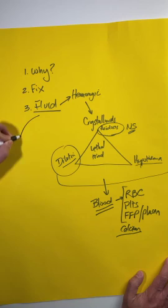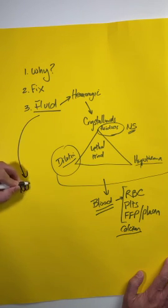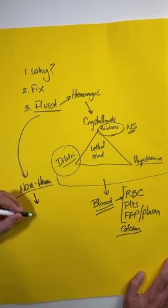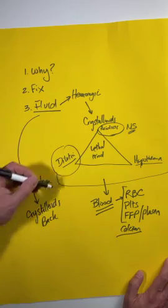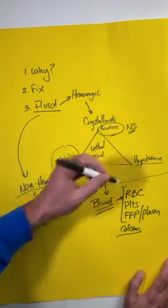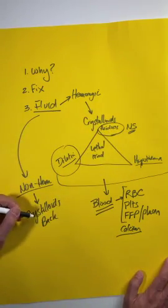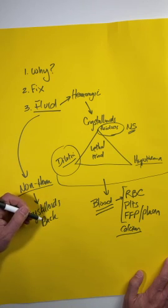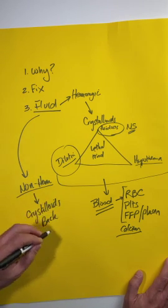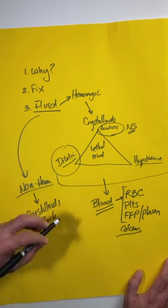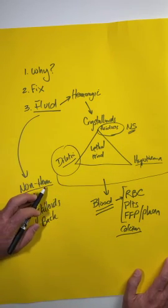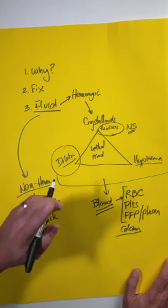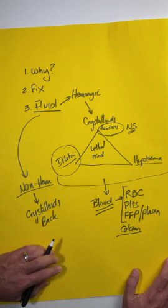When you have somebody who's in a non-hemorrhagic shock situation, you can give them crystalloids back. But just be careful, because if you over resuscitate these patients, they can still get dilution, they can still get acidosis, and they can still get hypothermia. You want to give the person just what they need to resuscitate them. This, however, is one of the questions in critical care that we have not perfected yet. There's lots of ways that we can get closer to the answer of how that person's volume status is, but that's going to be coming up later on this season in CritBits.